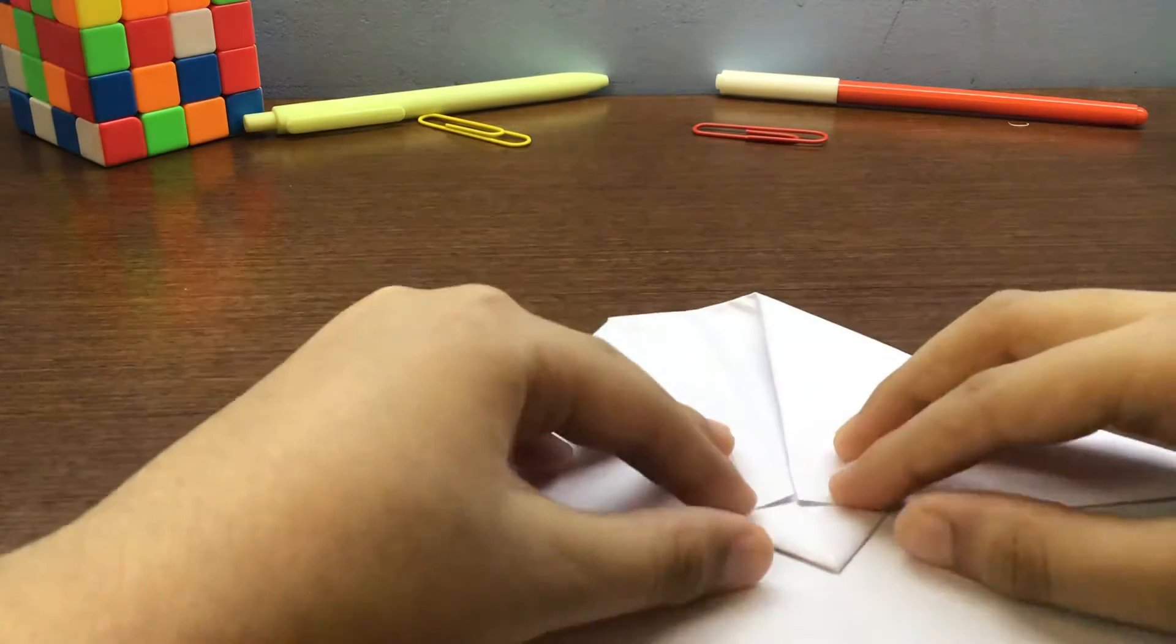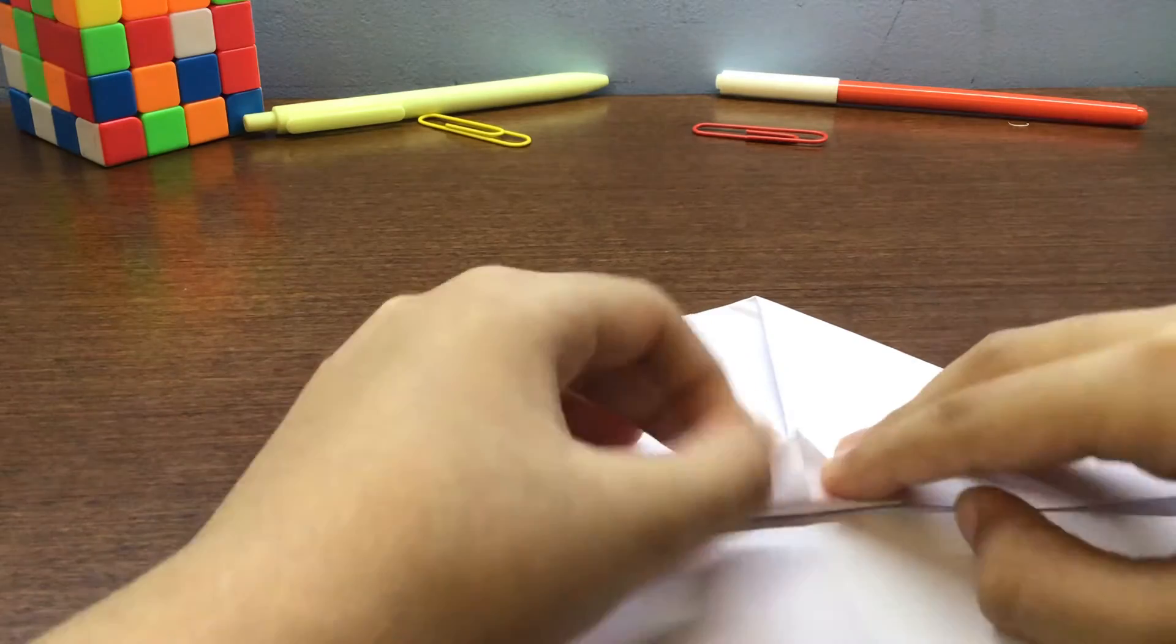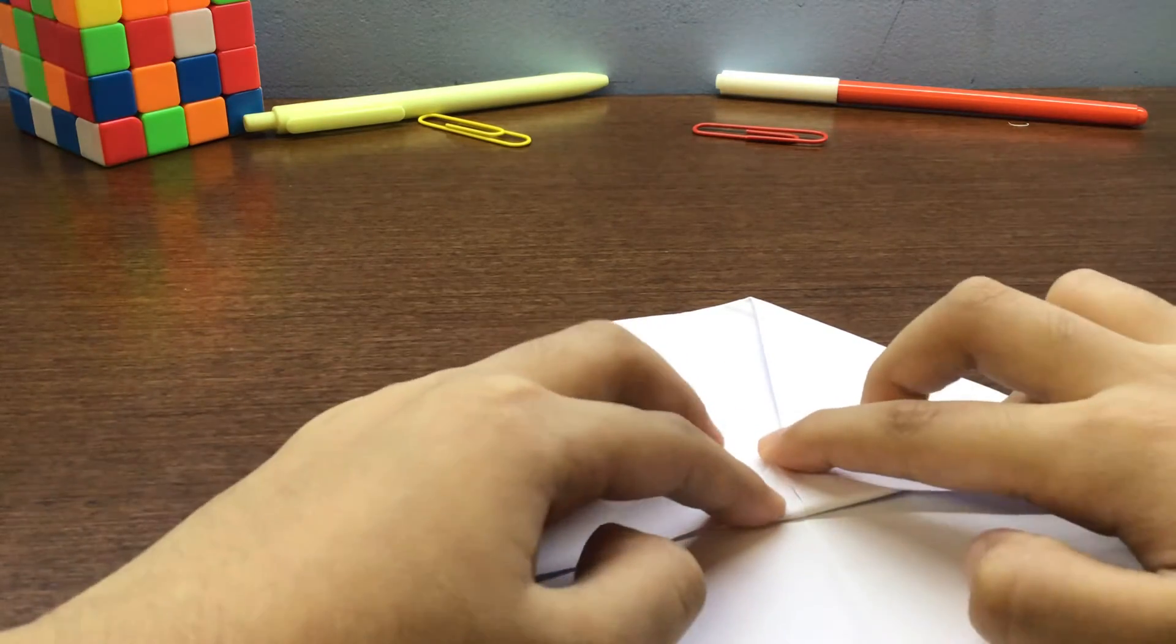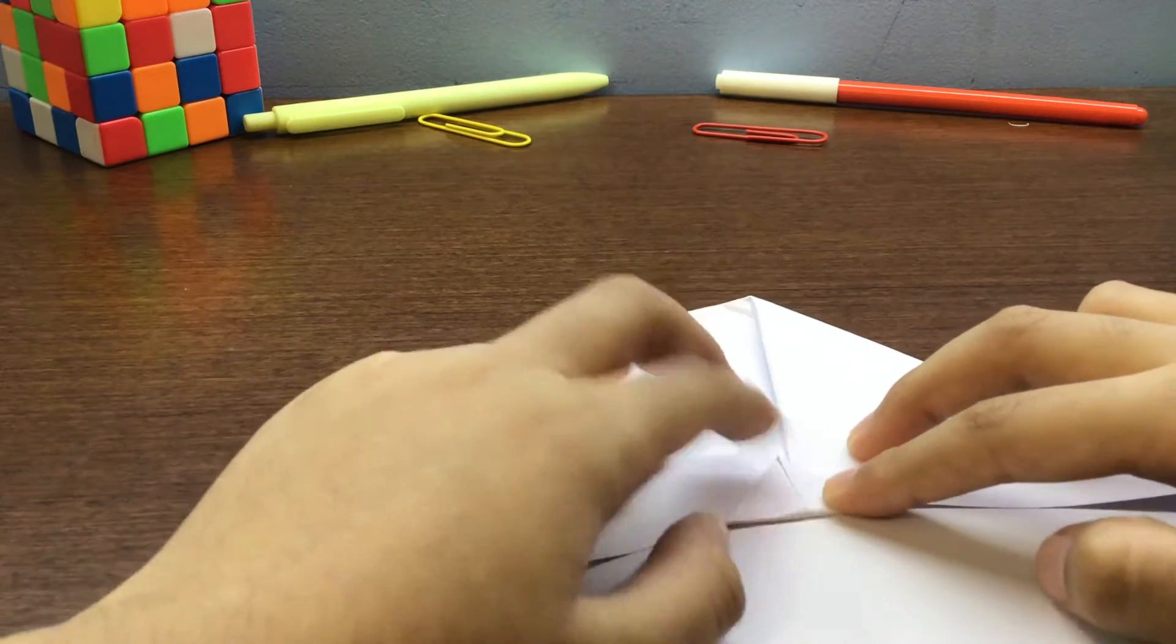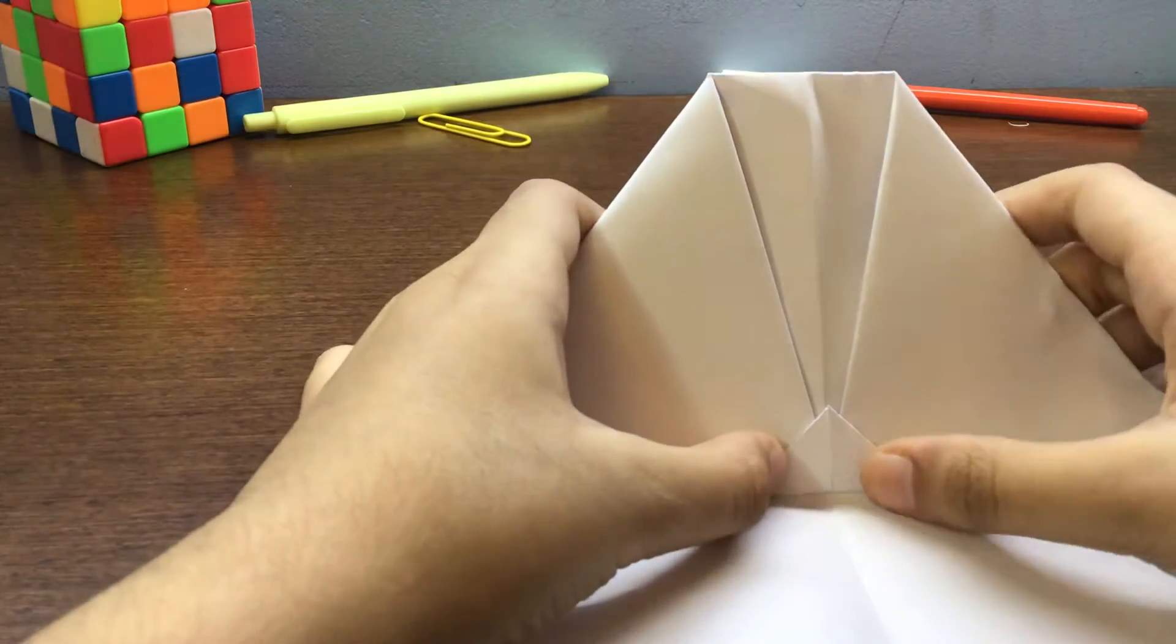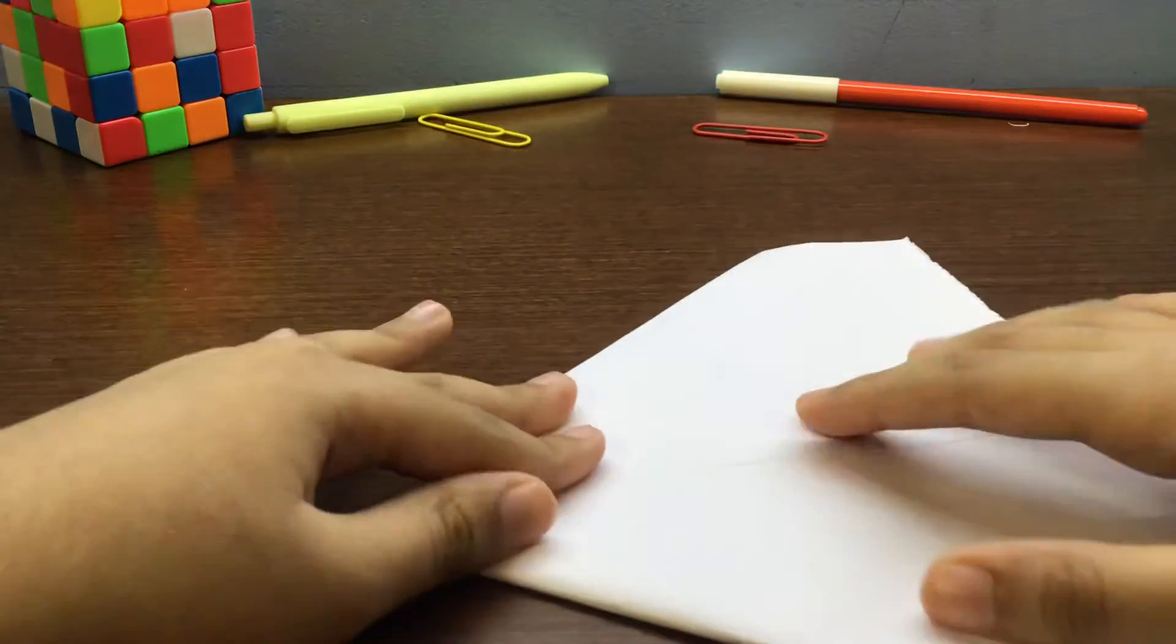You see here, like this. And we need to fold this tab up. Make sure this crease aligns with this crease and this point touches this crease like this. Now we're going to fold the wings, so hold it like this.